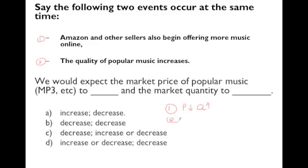Second change: the quality of music improves. We can assume more people will buy more music because the music is better, so the demand curve shifts to the right. That increases competition, so the price increases and the quantity increases. So now the impact on price: one change pushes it down, the other pushes it up — that's undetermined. The quantity we know goes up for sure.